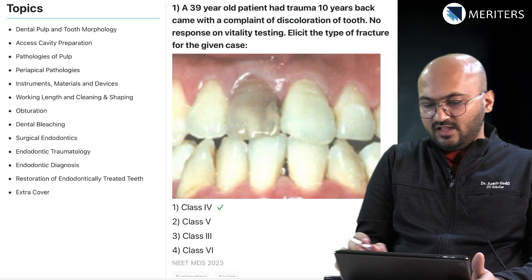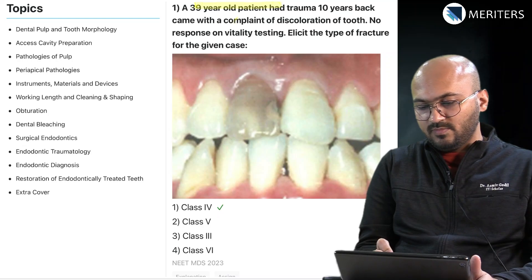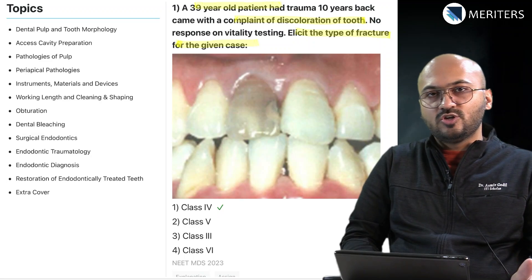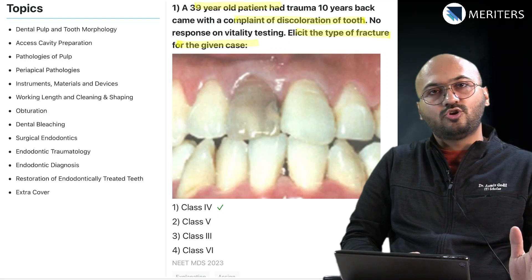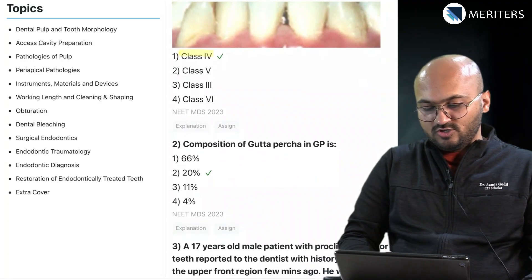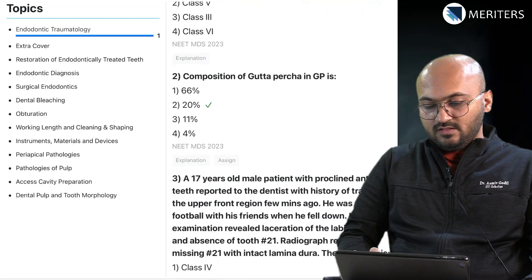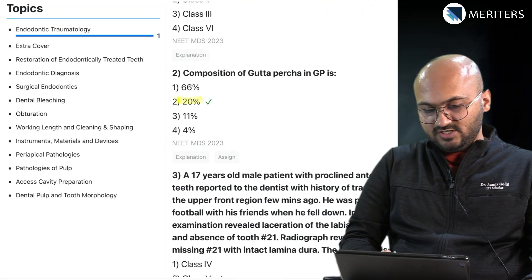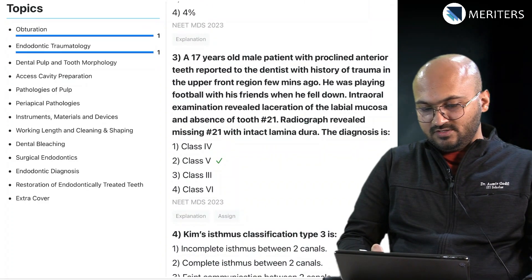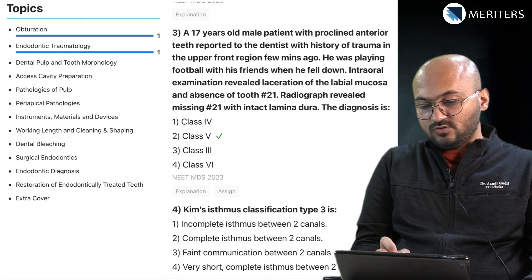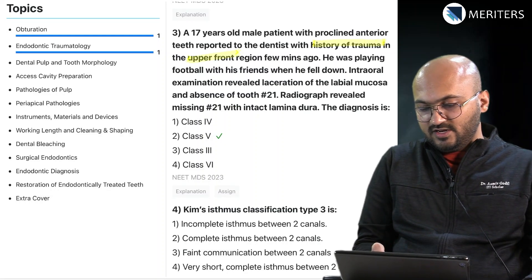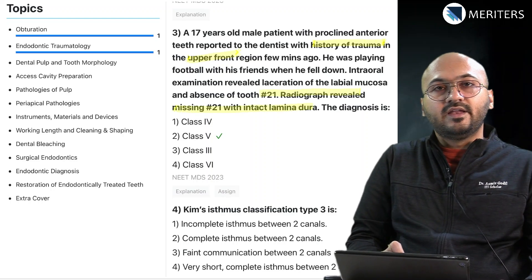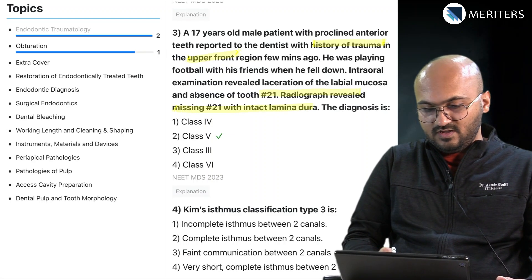The first question is a case-based question with an image of a 39-year-old patient complaining of a discolored tooth — you have to identify the type of fracture. Fracture and traumatology are also seen in the pediatric curriculum, so make sure you are revising from both sides whenever trauma is in question. Then there is a straightforward factual question on the composition of gutta-percha, and a clinical and radiographic findings question for a class 5 injury — again trauma.